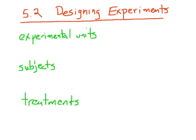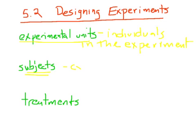The first vocabulary word is something called experimental units — that's just the individuals in the experiment. If you're doing an experiment on dogs, the experimental units would be the actual dogs or rats you're using. If you're doing an experiment on pesticides keeping pests off tomato plants, the experimental units are the tomato plants. If the experimental units are people, we don't use the term experimental units — we use the term subjects. Subjects just means experimental units that are people.